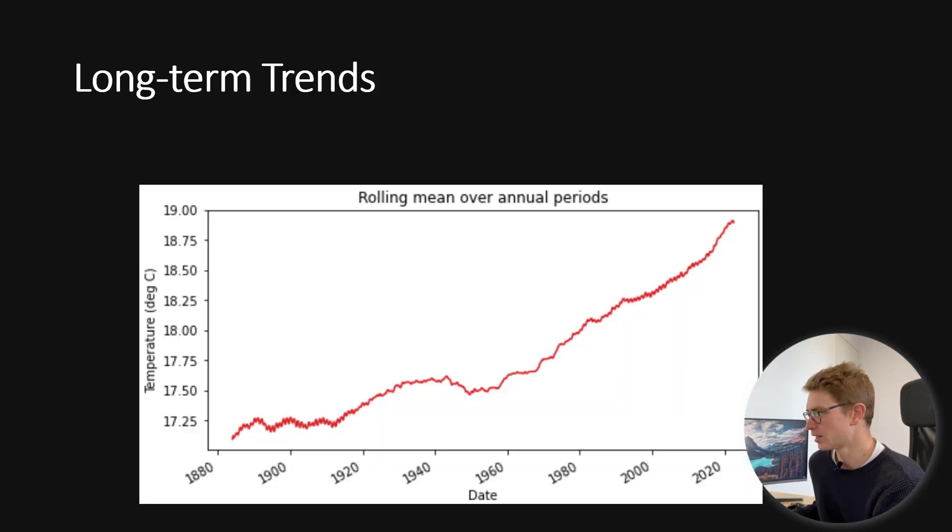Let's start with the long-term trends. If I take the rolling mean over all these annual periods, then what we get is a temperature series that looks like this. This looks like an incredible linear trend to me. So, I am proposing that we use a linear model with just an intercept A and then a gradient B. In summary, over these 160 years, we can see that the long-term trend in that average has gone from 17 degrees Celsius through to 19.